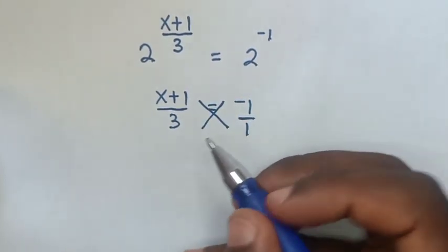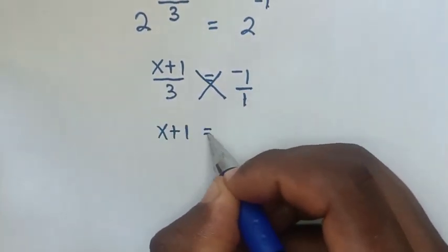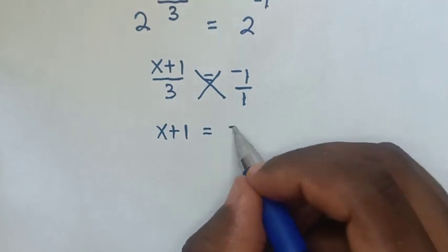Then we will cross multiply. So x+1 equals -3.